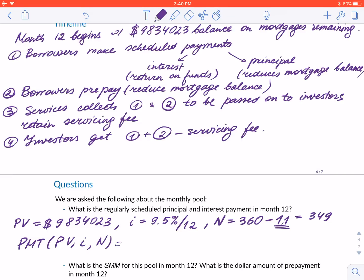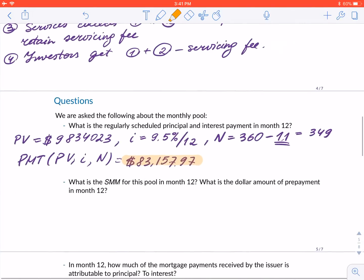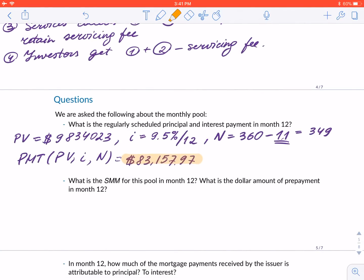To find the payment, we put all these values in the calculator and get $83,157.97. I did these calculations beforehand so I don't waste time, but feel free to pause this recording and check for yourself.